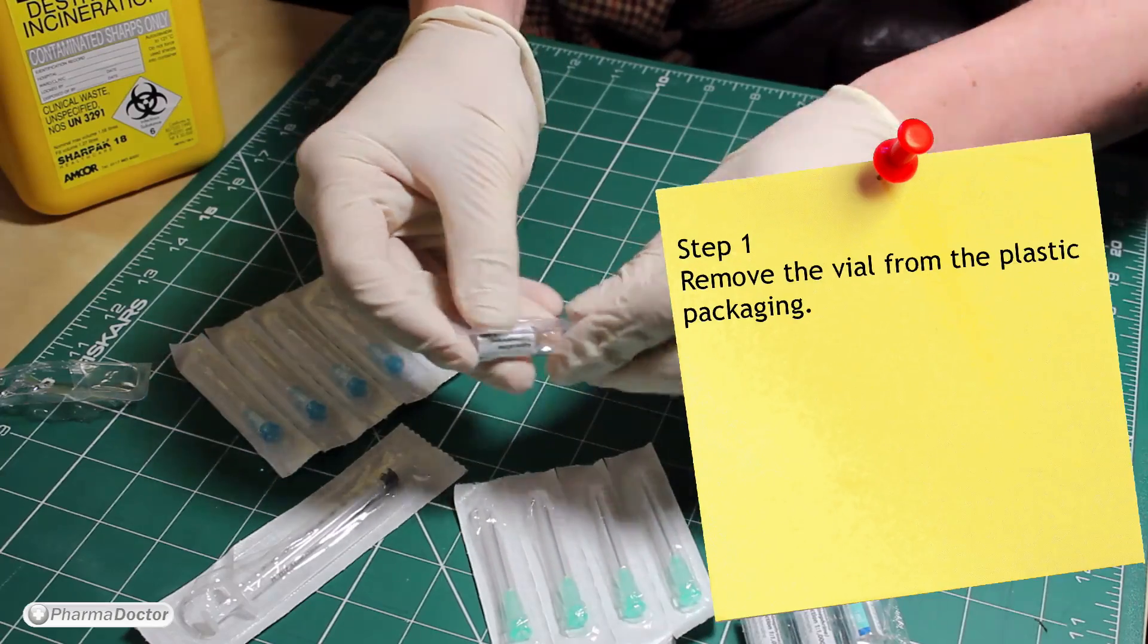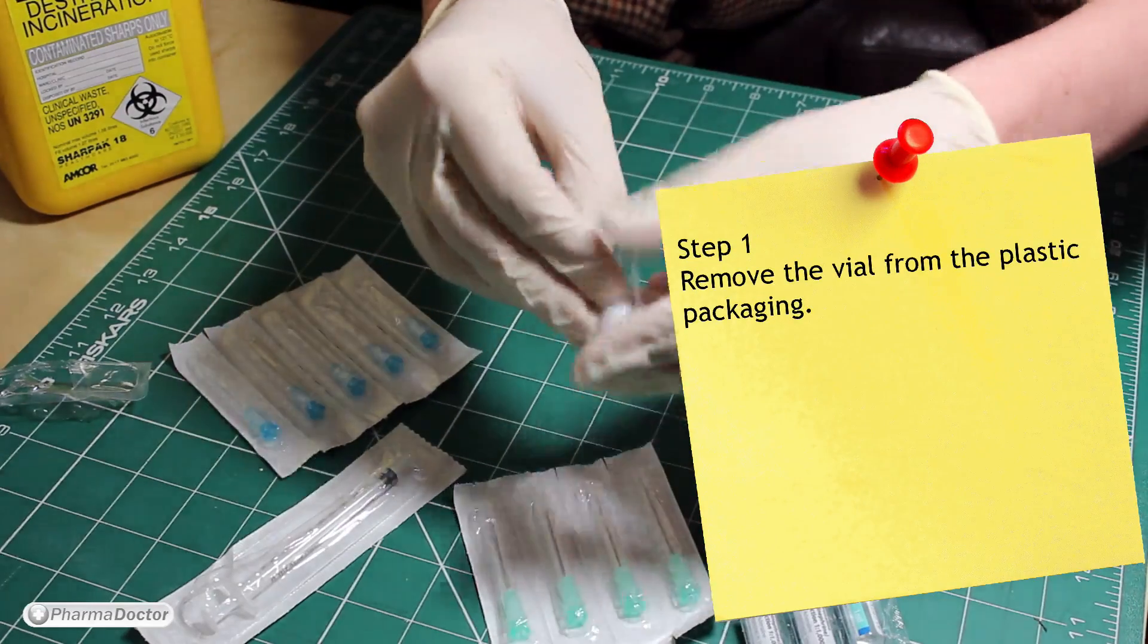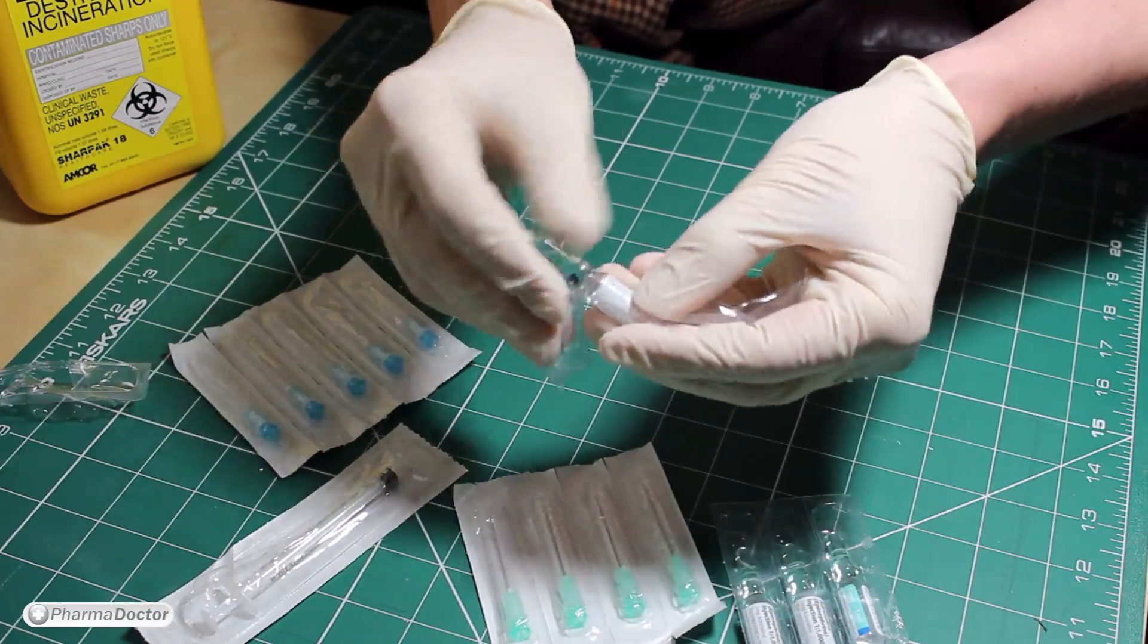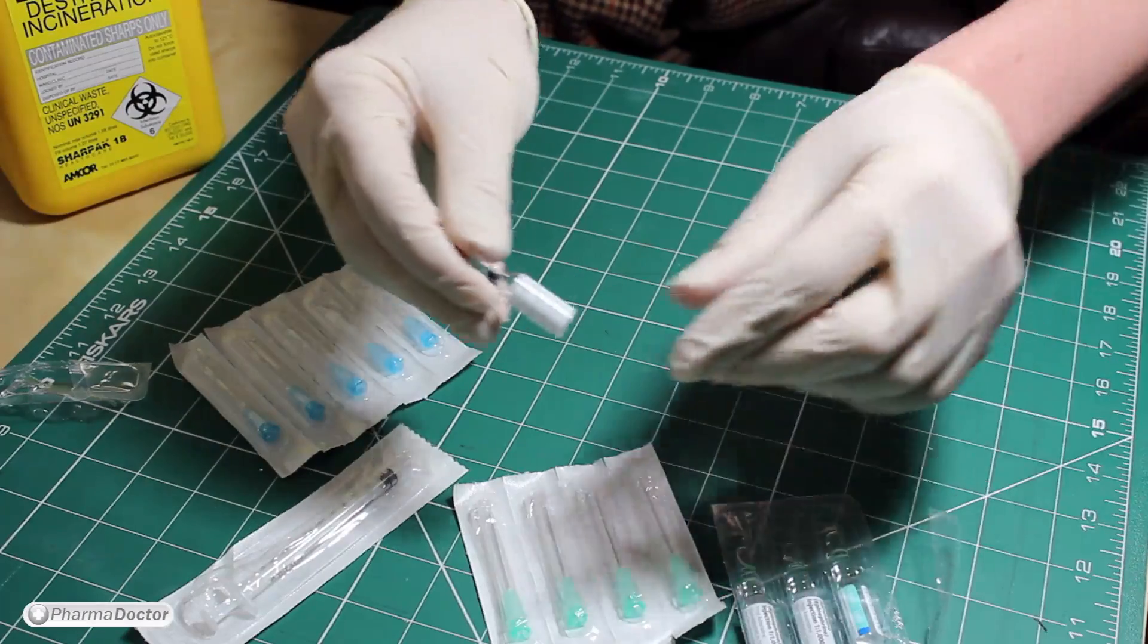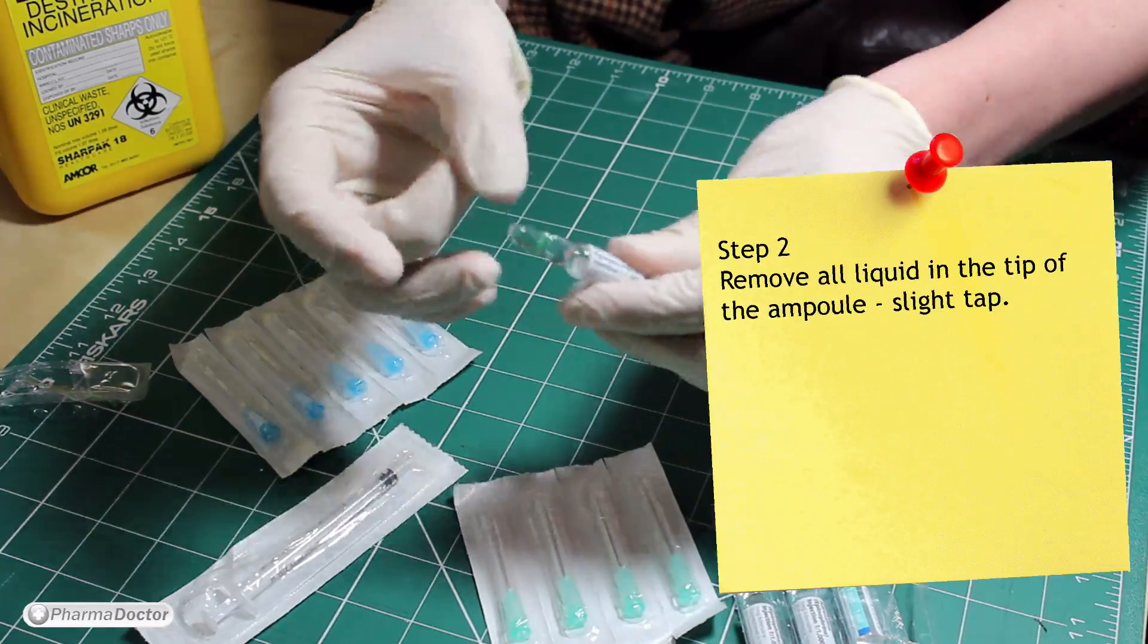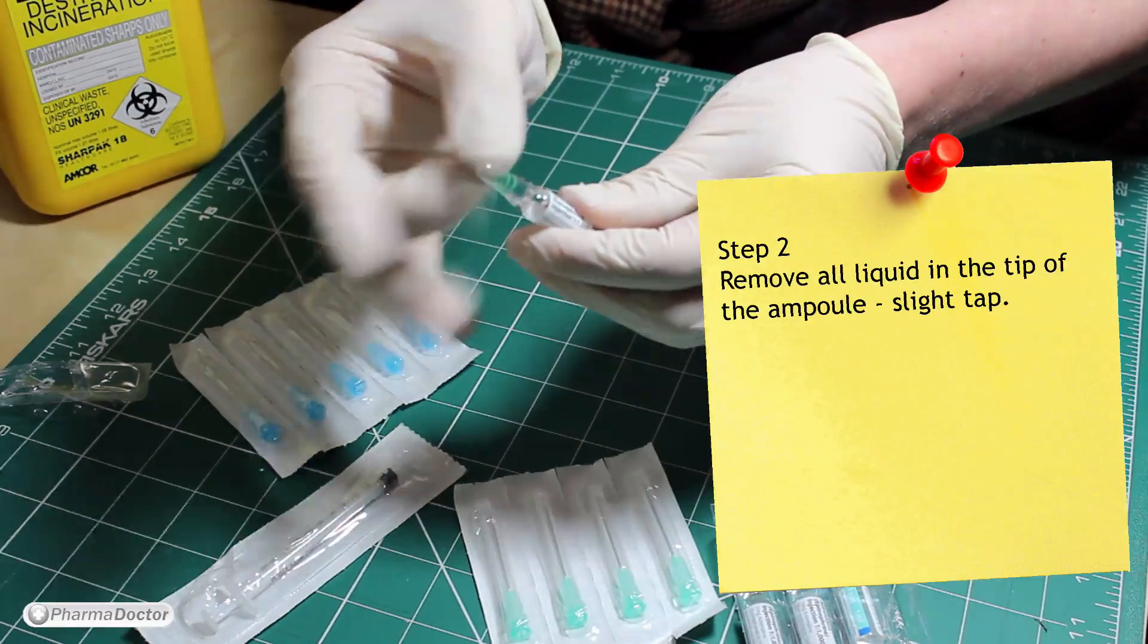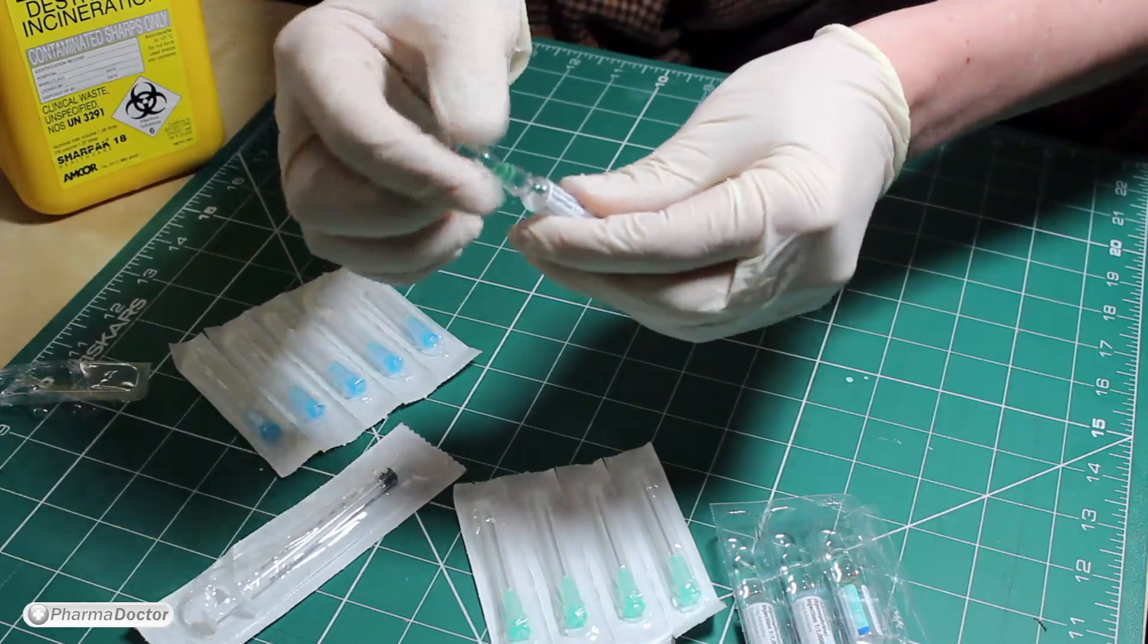Step 1 is to remove the vial from the plastic packaging. Watch out, this can be a little bit tricky sometimes. The next step is to remove all the liquid in the tip of the ampoule. You do this using a slight tap.